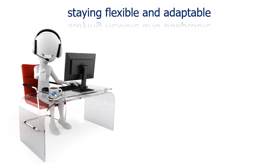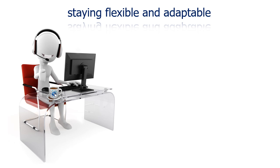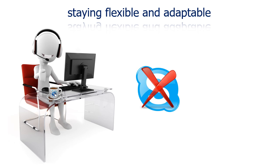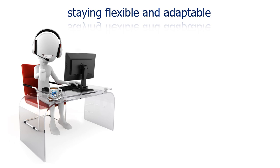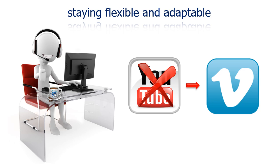Even with well-laid plans, things do not always go smoothly when using technology for teaching and learning. But if you know what you want to achieve and you've evaluated your technology options, it's easier to remain flexible and be ready to adapt, sometimes on the fly. For instance, if your email server is down, have a listserv service like Google Groups ready as a backup. If Skype's acting up during a video conference, switch to Google Hangouts. If YouTube doesn't work for your students, try something like Vimeo instead. Always have a backup plan, and it's easier to have one when you've already analyzed alternative tools.